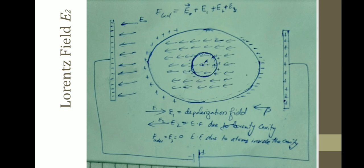The depolarization field E1 acts from left to right. The spherical cavity carries a fictitious surface charge density opposite to the outer boundary — positive on the right side and negative on the left side — and again a field E2, known as the Lorentz field, is produced from right to left. E3 is the field at any point A inside this spherical cavity due to all the dipoles inside the cavity.